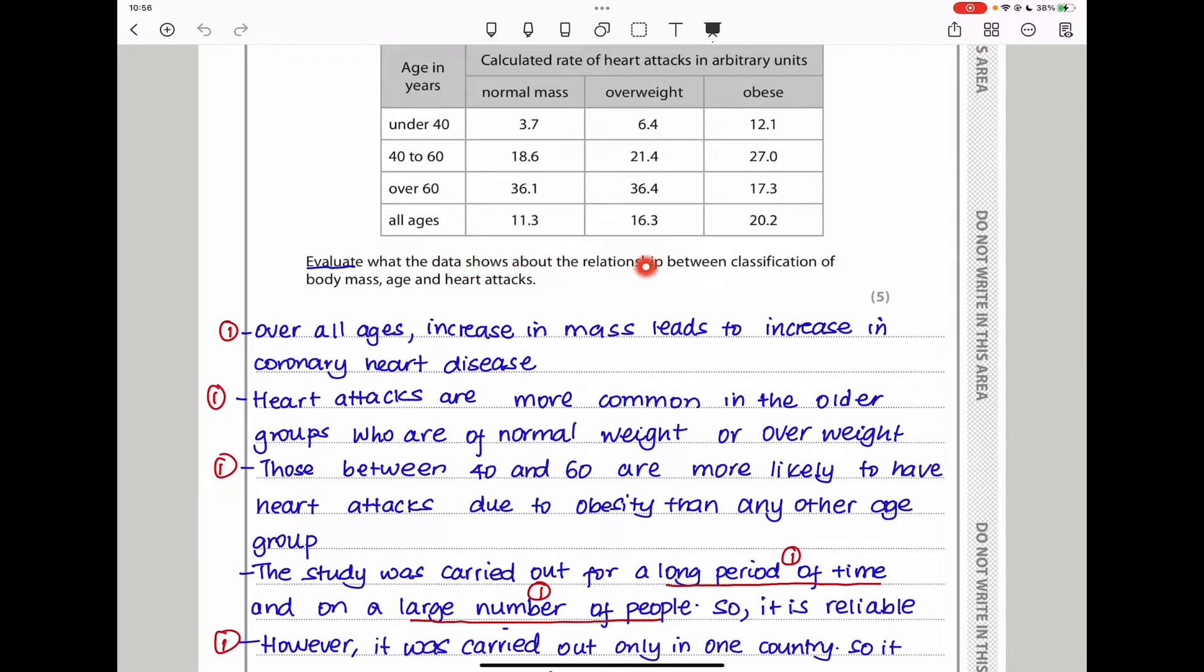The question said, evaluate what the data shows about the relationship between classification of body mass, age, and heart attacks. I said, over all ages, increase in mass leads to increase in coronary heart disease. As we can see, as mass increases, moving from normal mass to obese, you can see this one has the highest. I also said heart attacks are more common in older groups who are of normal weight and overweight. So I also said those between 40 and 60 are more likely to have heart attacks due to obesity than any other group range. You can see this calculated rate is 27 in comparison to all the other three.